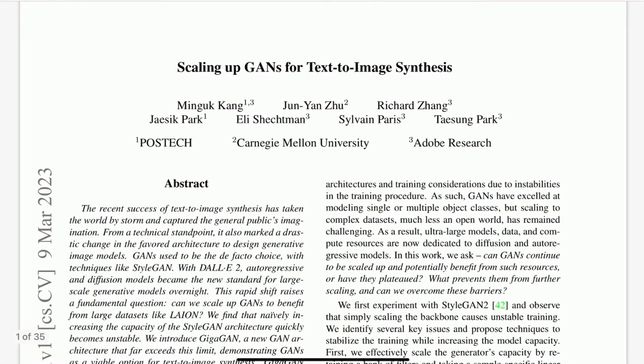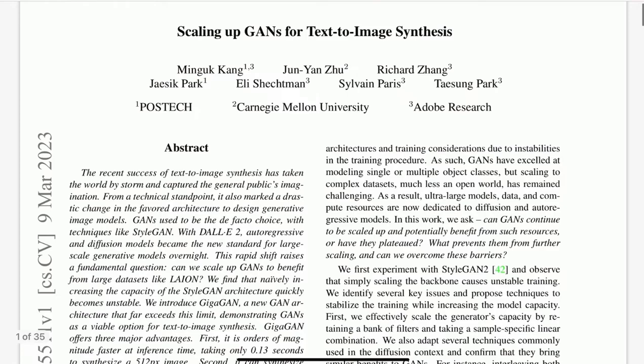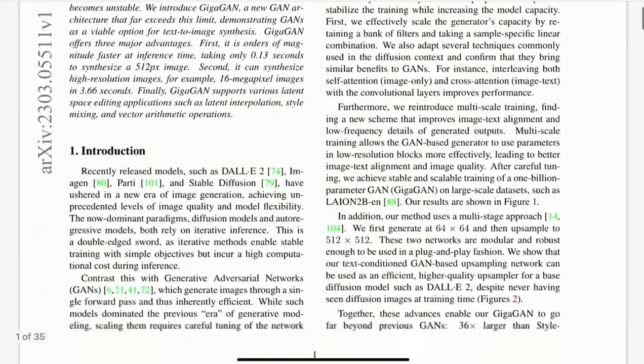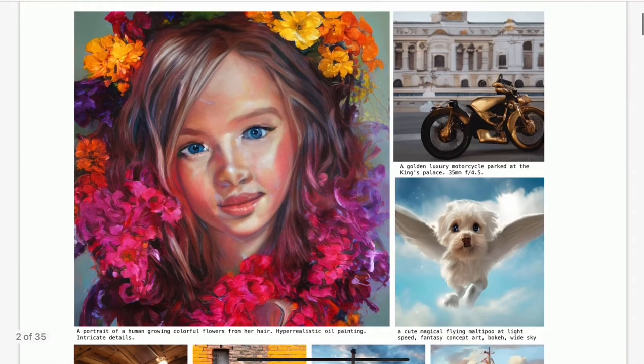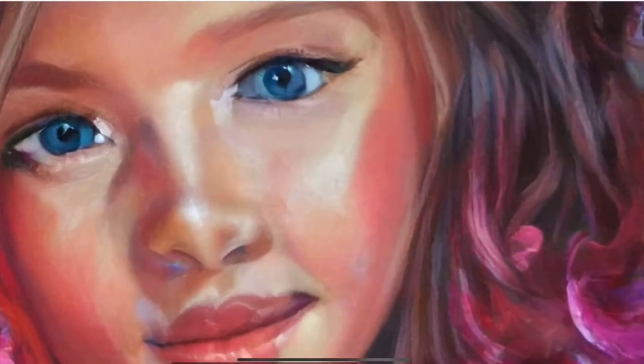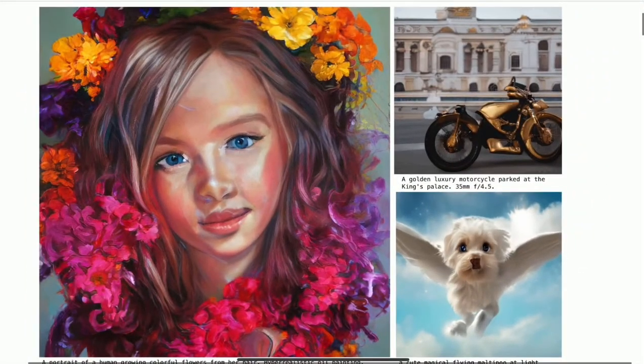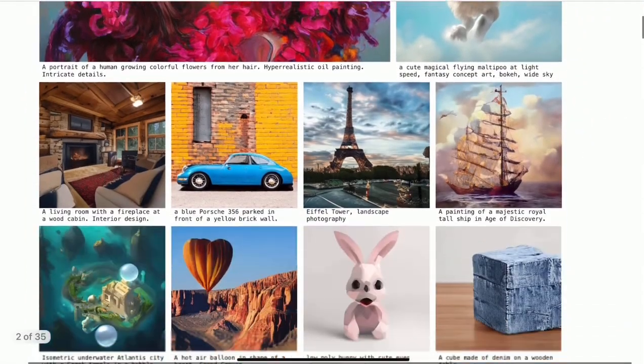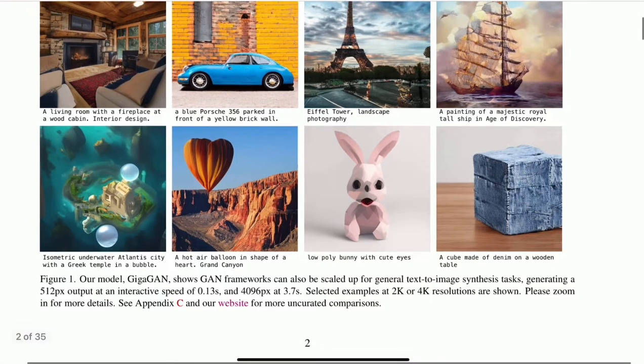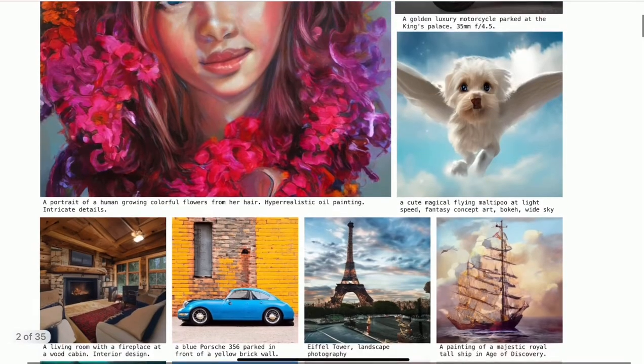This time we are talking about Scaling Up GANs for Text-to-Image Synthesis. It is a GAN that generates images from text, and what is nice about this paper is that you can generate those high-quality images using a GAN, and since it's a GAN it's pretty fast. You can generate 512 pixel output images at 0.13 seconds or 5120 pixel images in 3.7 seconds. So this is pretty impressive.